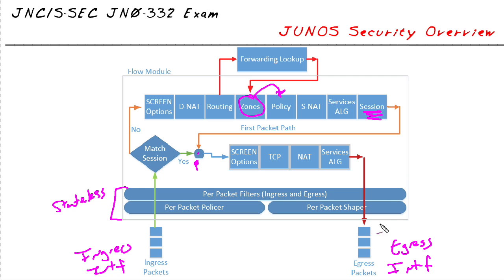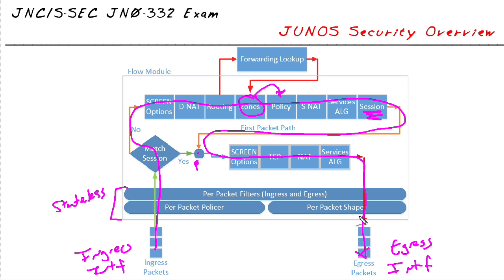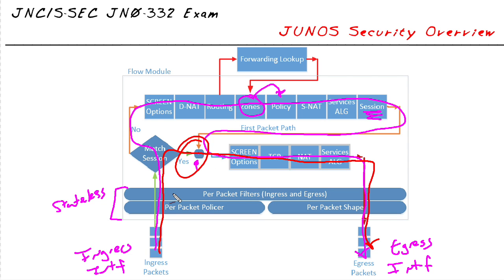That basically shows how packets are going to flow. First-time packets go all the way through the full path — up, around, and down. Subsequent packets simply go up and straight over — a whole lot faster — because they match existing flow table entries. That is the idea of flow-based forwarding on my SRX routers.